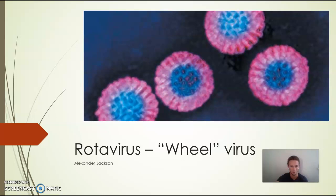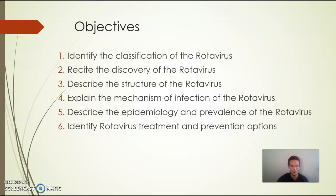We'll do a little bit of a background on the rotavirus in general. Our goals for the day are sixfold. We're going to go through the classification—the taxonomy of the rotavirus—the discovery, the structure, and based on that structure, the function and the mechanism of infection. And then finally, we're going to look through the epidemiology: where it's occurring, how it's spread, and the statistics, as well as identifying the treatment and prevention options, which are pretty widespread now.